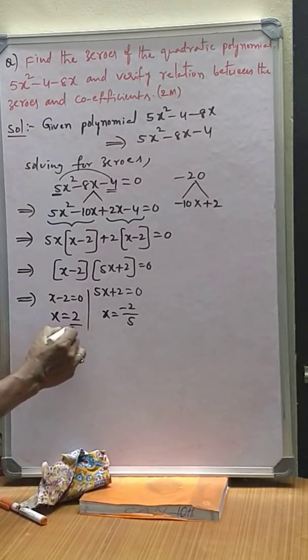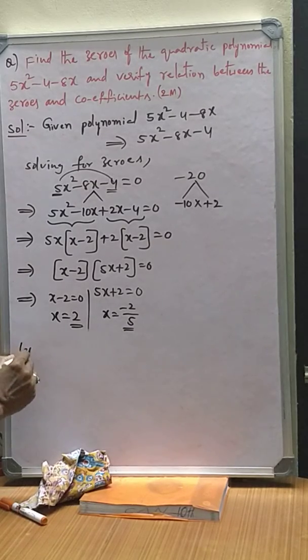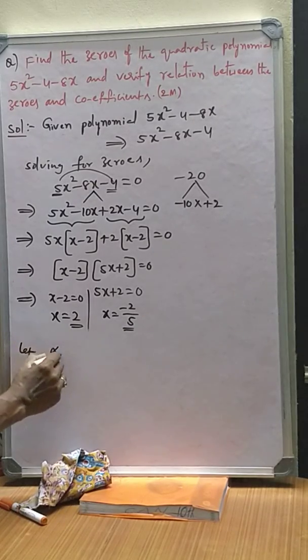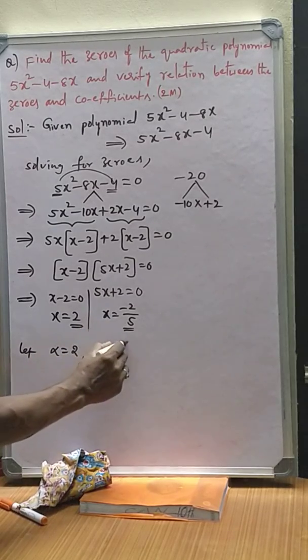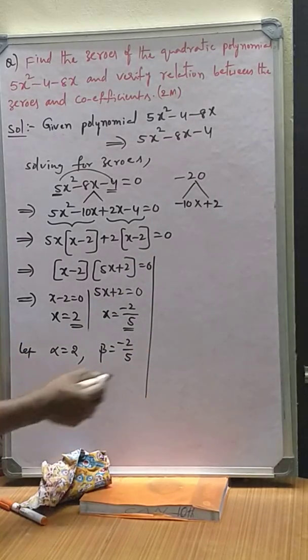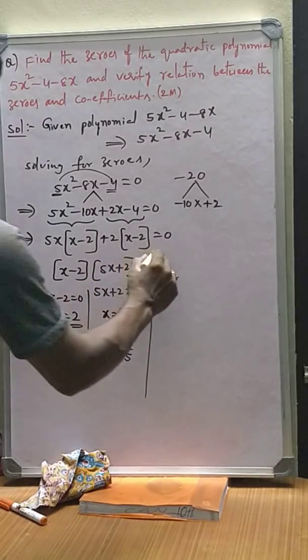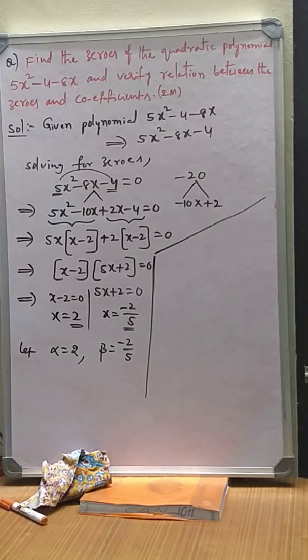Here, zeros are 2 and -2/5. Let one of the zeros as α. α = 2. And another zero as β, β = -2/5. Now, after getting the zeros, we have to verify the relation between coefficients and zeros.